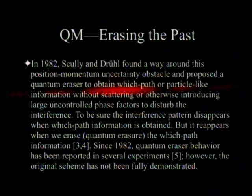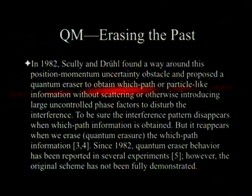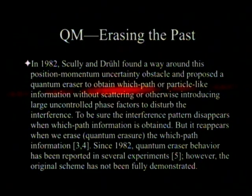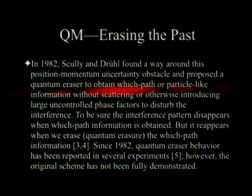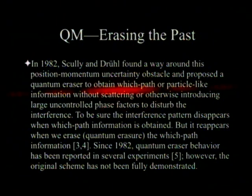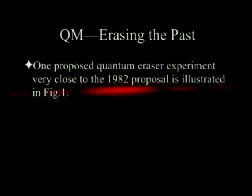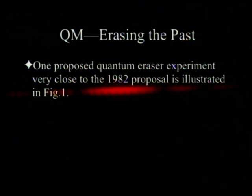In 1982, Scully and Drill found a way around the position-momentum-uncertainty obstacle and proposed a quantum eraser to obtain which-path or particle-like information without scattering or introducing large uncontrolled phase factors to disturb the interference. The interference pattern disappears when which-path information is obtained, but it reappears when we erase — called quantum erasure — the which-path information so that nobody can ever tell again. Since 1982, quantum erasure behavior has been reported in several experiments. What you have here is a source of ultraviolet light that goes through two slits — it could go through the top slit or the bottom slit.